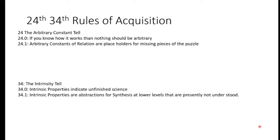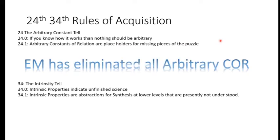Let's review the 24th and 34th rules of scientific acquisition. The 24th rule is the arbitrary constant tell — a derivative of the 17th rule, which is the ambiguity tell. Rule 24.0: if you know how things work, then nothing should be arbitrary. Rule 24.1: arbitrary constants of relation are placeholders for missing pieces of the puzzle. Ethereal mechanics has eliminated all arbitrary constants of relation in science. It's the end of classical physics because we don't have any more arbitrary constants of relation. There may be some others out there, but they are academic at this point — because the main ones have been de-ambiguated, we can unwrap the others as well.